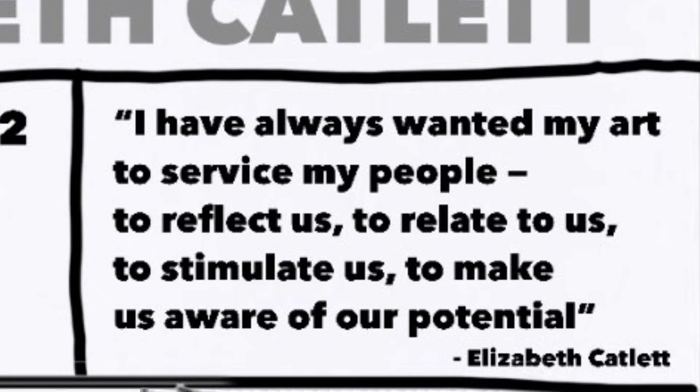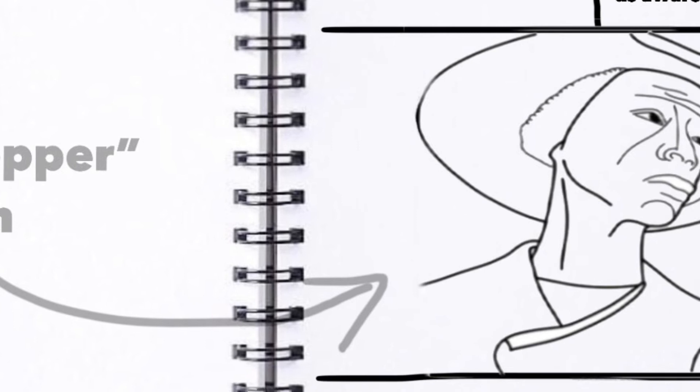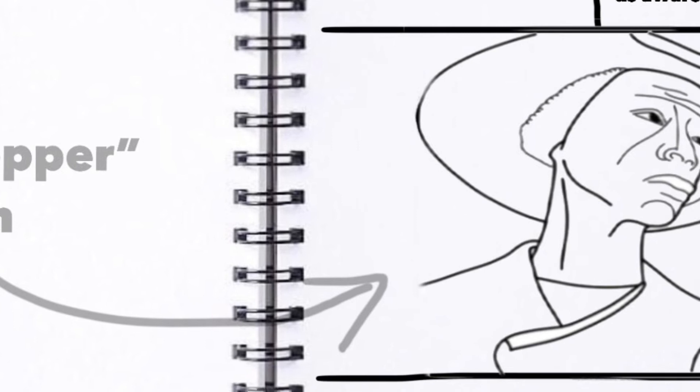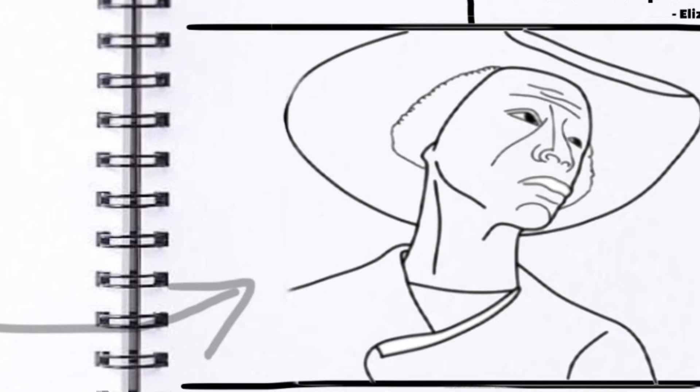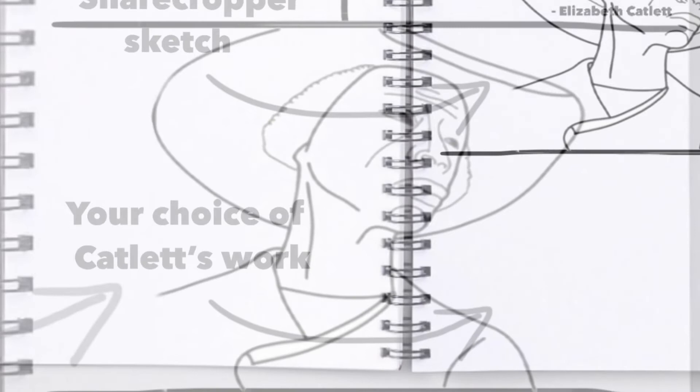In the middle section, you're going to create a sketch of Catlett's most famous work, which is The Sharecropper. This image shows you a simplified version of the lines and shapes to help you get it set up, but then I want you to develop it with value and high contrast — whether through shading, hatching, or cross-hatching.